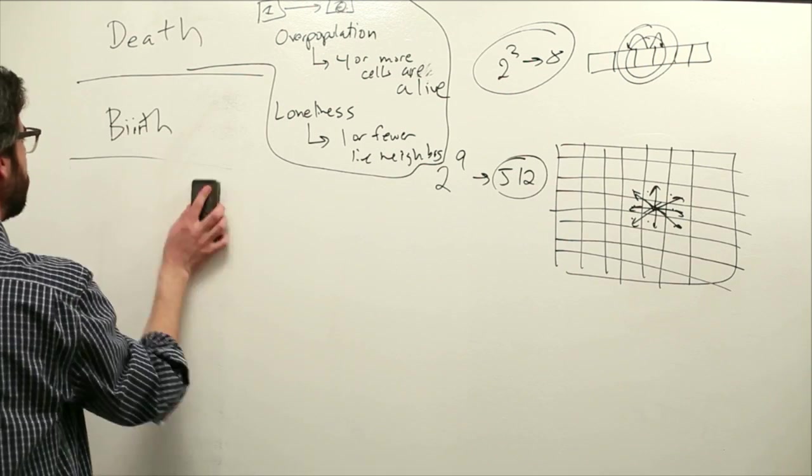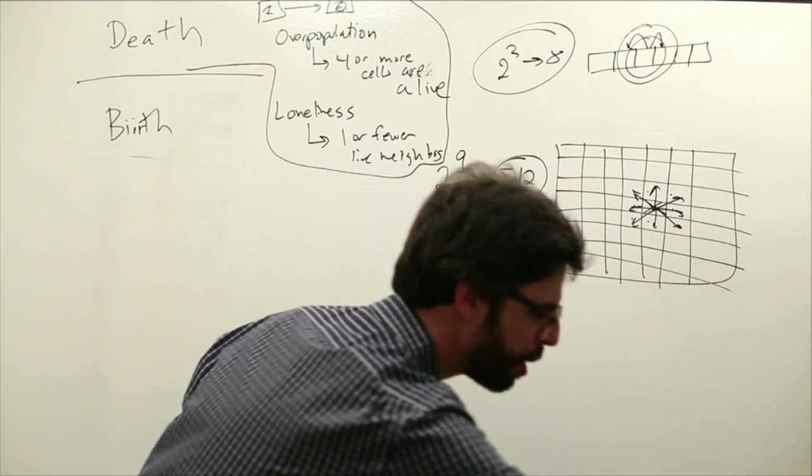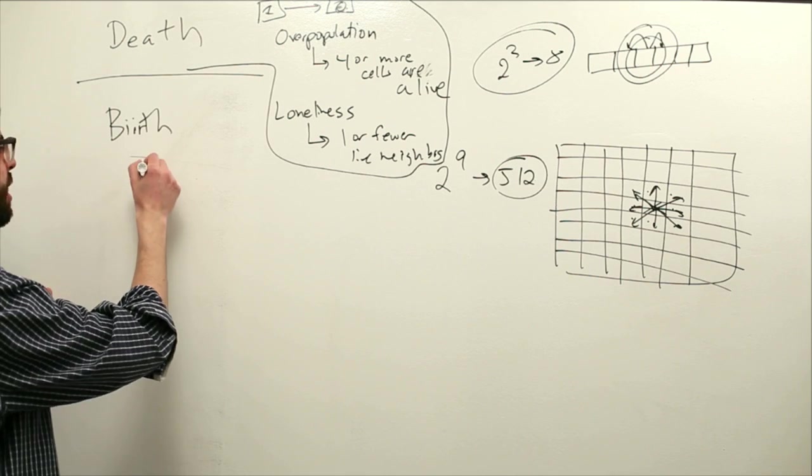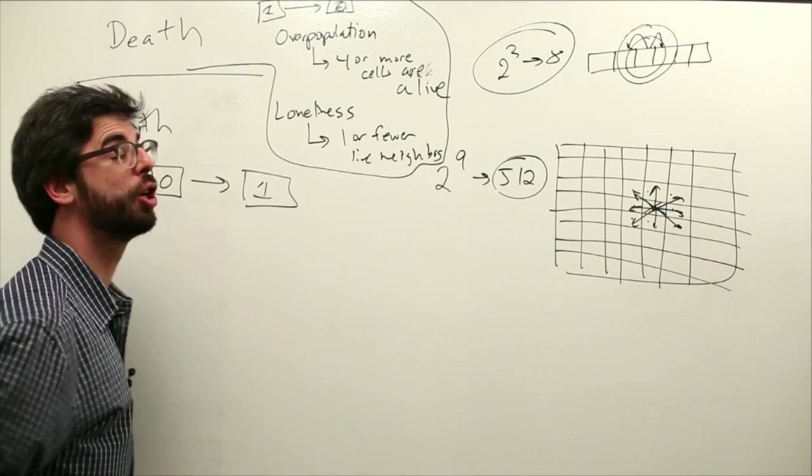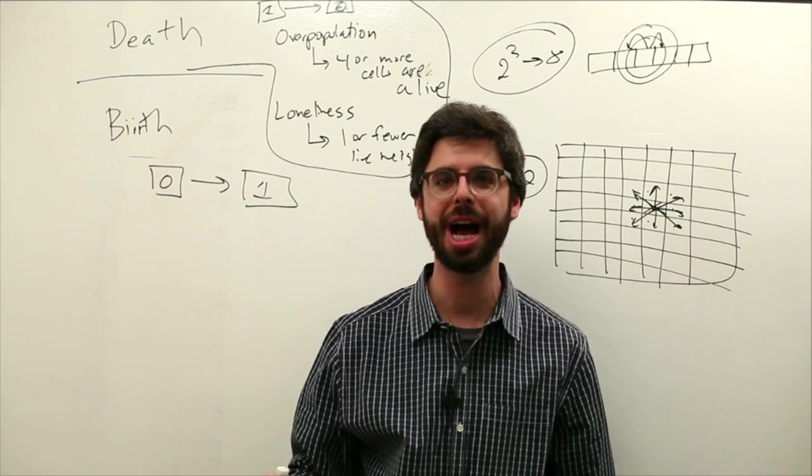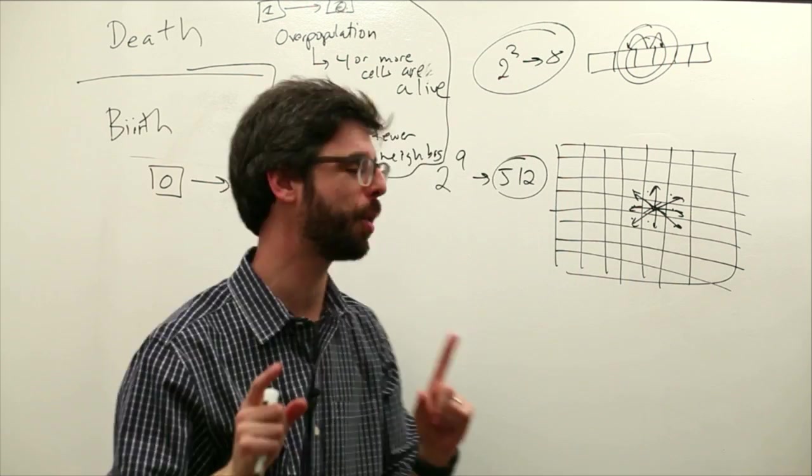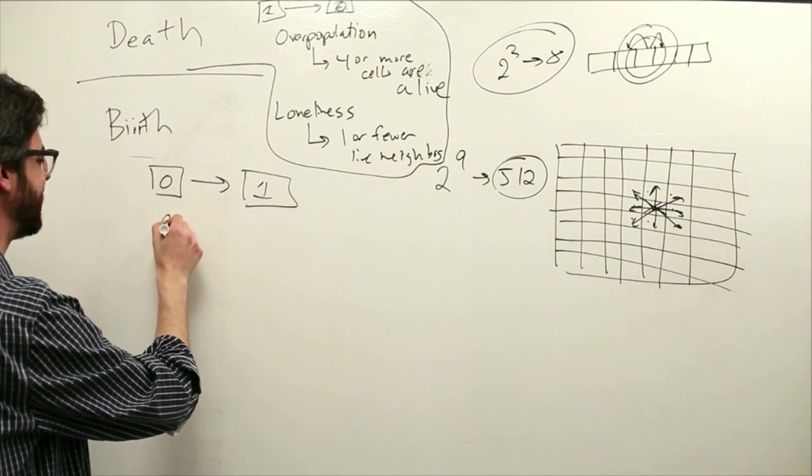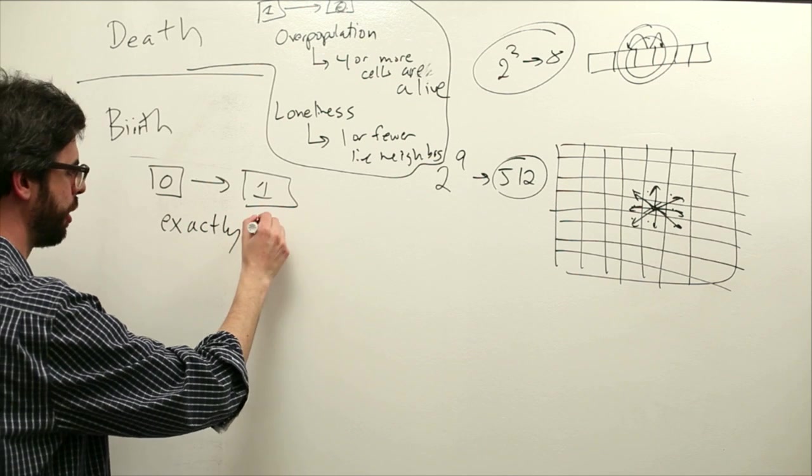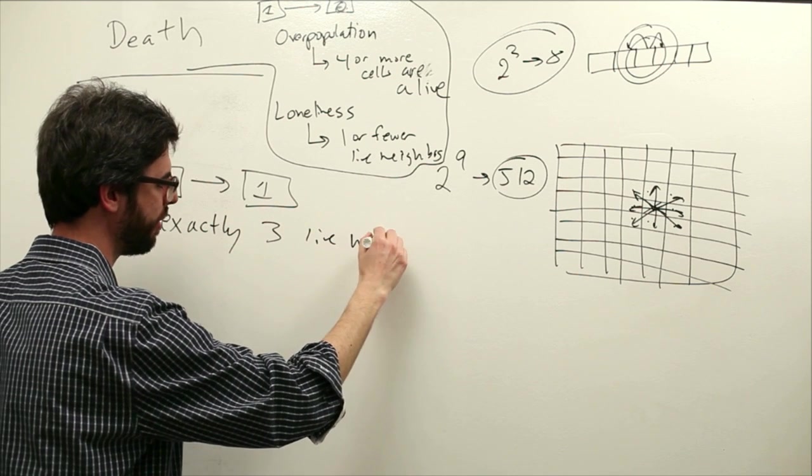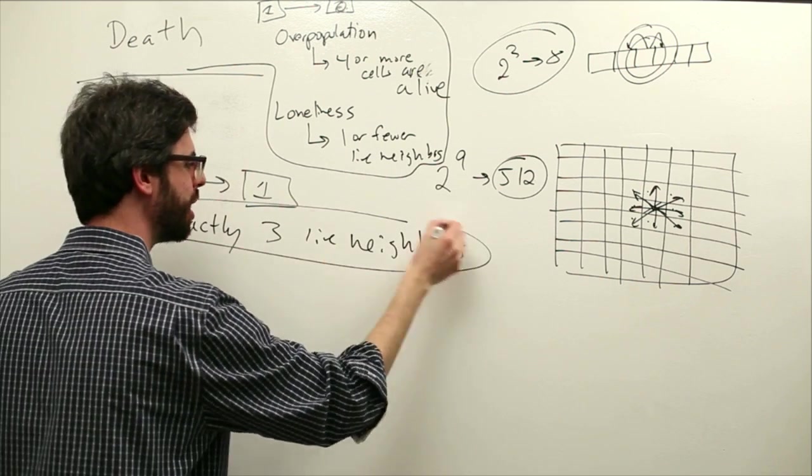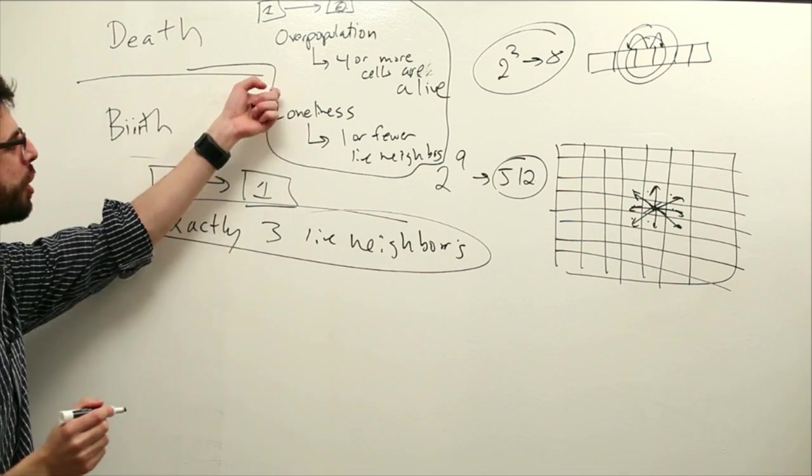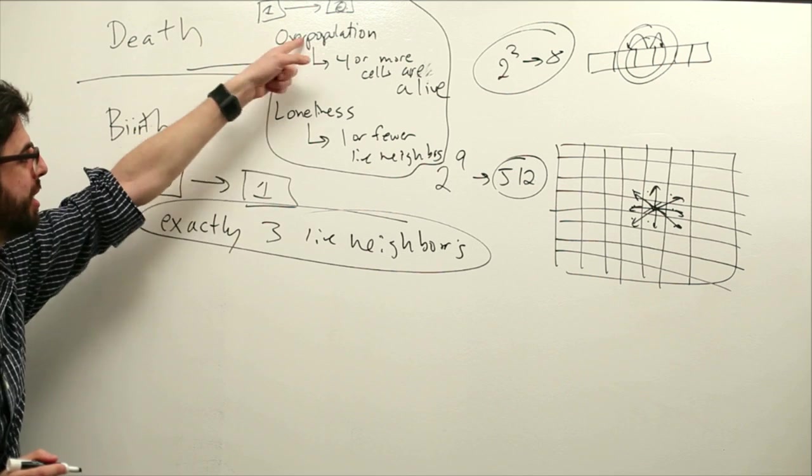Now, let's think about birth for a second. Birth is when our state was zero, and now we're going to be born. We're going to go from dead, zero, to alive. The only time we have birth is if we have exactly three live neighbors. So these are the conditions by which we die, go from one to zero. This is the condition by which we go from zero to one.